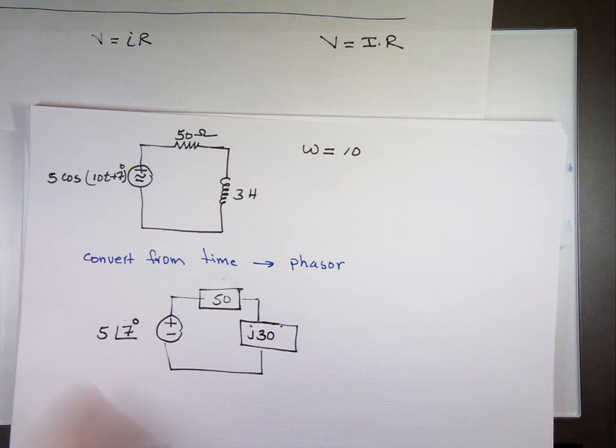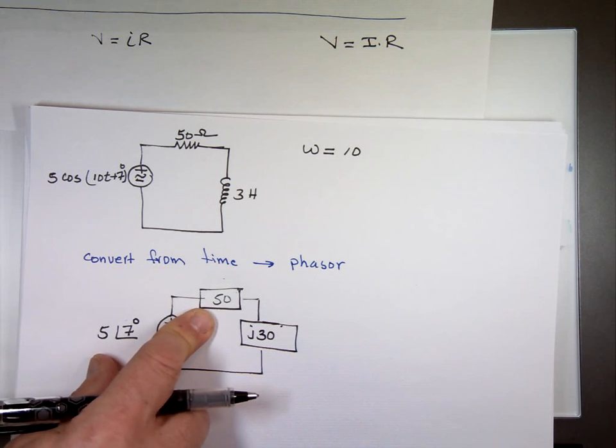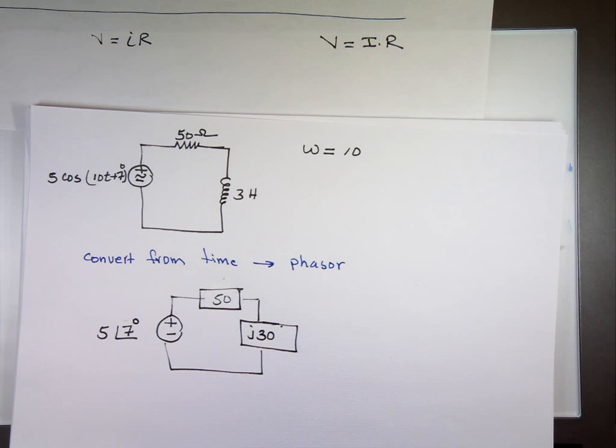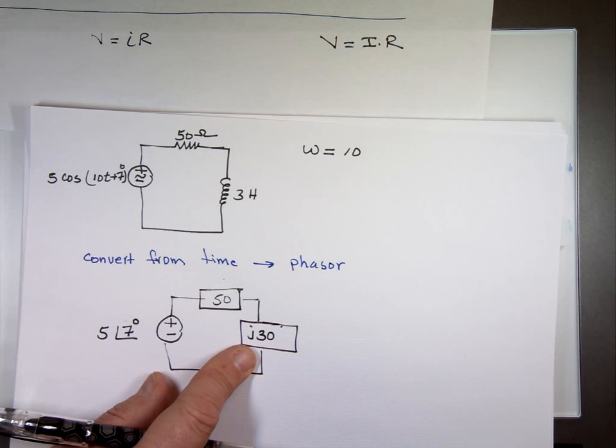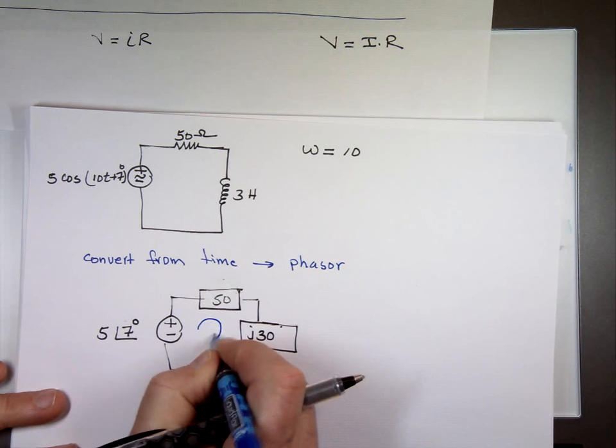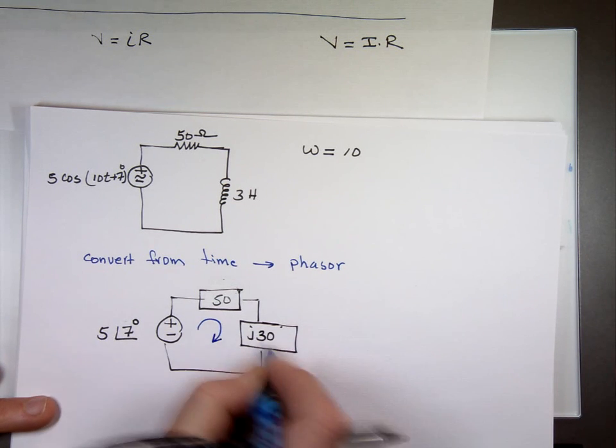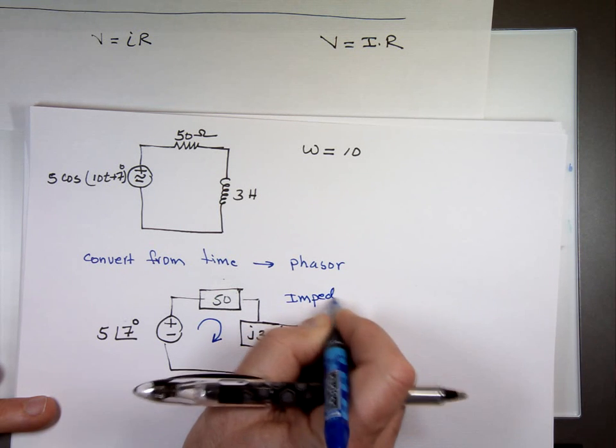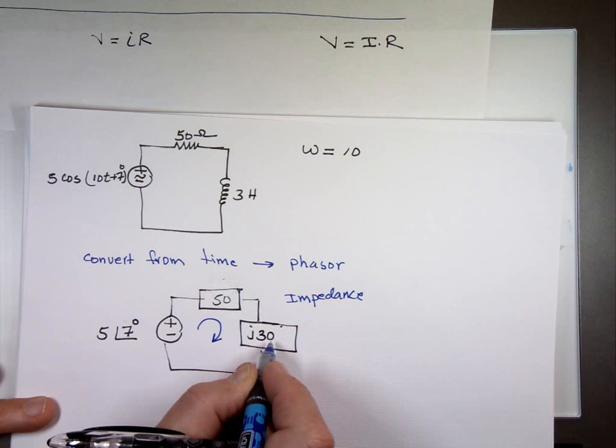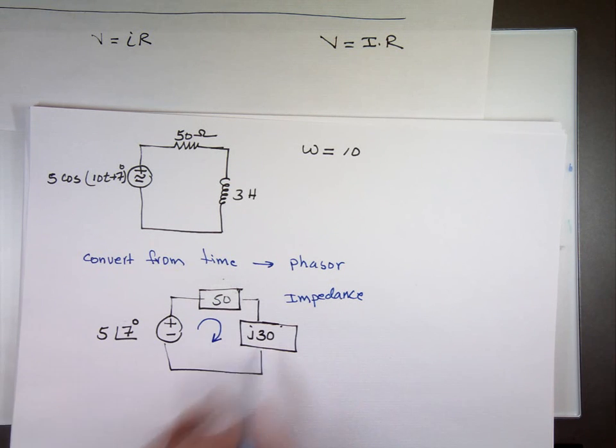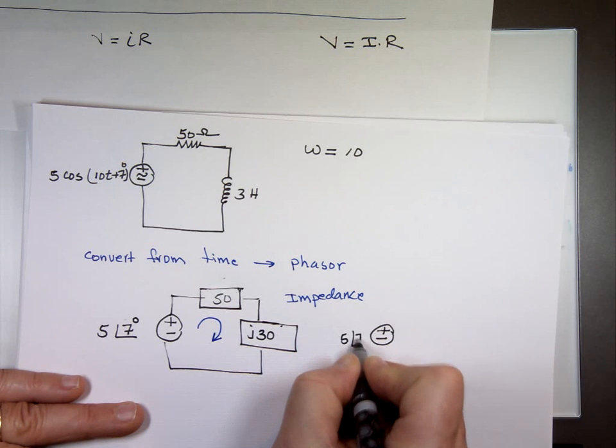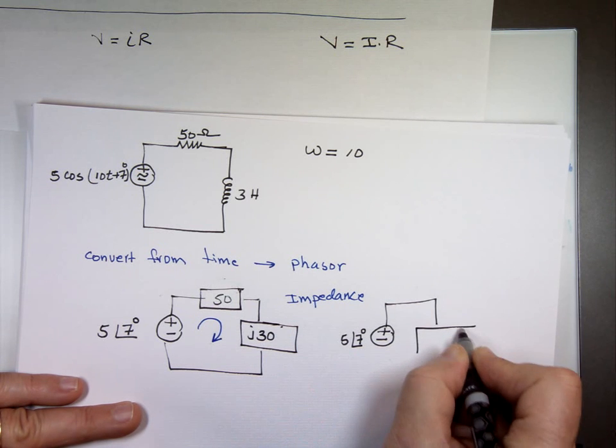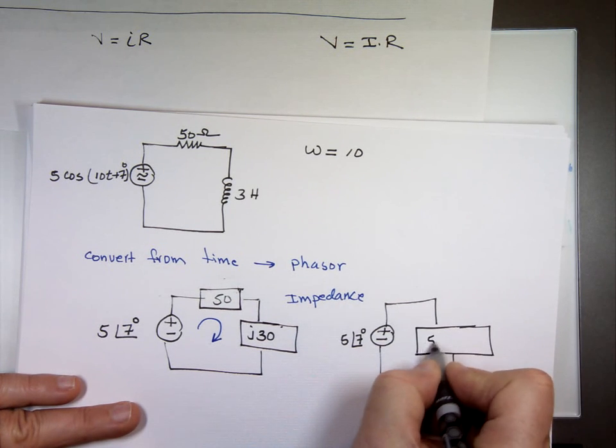I converted the source to phasor, the resistor to phasor, the inductor to phasor. And now we treat these, even the inductor, just a complex value, just like it was a resistor. If I'm looking for the current here, these two, we call them impedance. That's an impedance. These two impedances are connected how? In series. So if they were resistors in series, what would you do? All right, then we're going to do the same thing here. I'm going to treat them just like if they were resistors, but they just have a funny number. The value here becomes 50 plus j30.